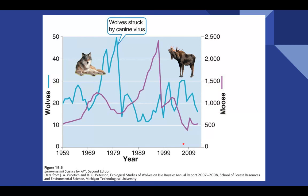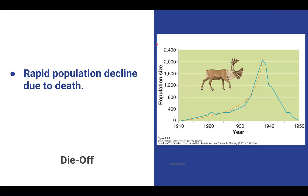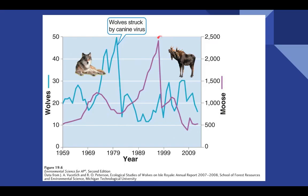Another example is a predator-prey relationship and how it controls populations. On Isle Royale in Michigan, you can see an increase in wolves, but then a virus struck the wolf population. Wolf populations plummeted and, as a result, moose populations increased. But going back to die-off and carrying capacity, the moose — the same way the reindeer did on the island in Alaska — probably overshot their food supply and drastically dropped. Then we see the wolf population bounce back and they even each other out.